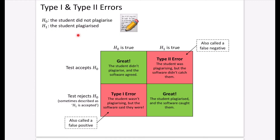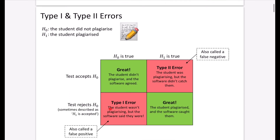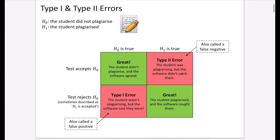If you're going into medicine, this understanding of testing is going to be incredibly important — you can see how it plays into the role of a doctor. The type 2 error is where the student is plagiarizing but the software didn't catch them — the equivalent in medicine is that the person has the disease but the test didn't diagnose them, which could be very dangerous. This is called a false negative because the result of the test was negative — the student did not plagiarize, or the person did not have the disease — and it's false because they actually did.